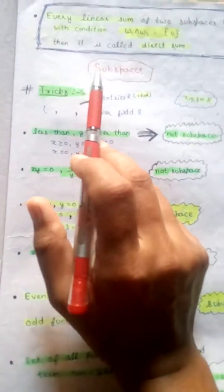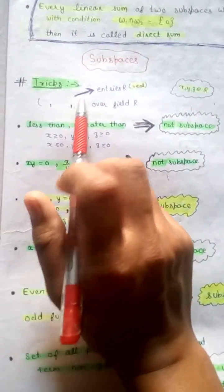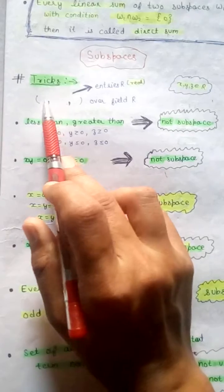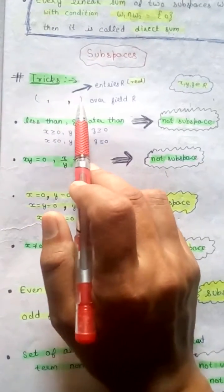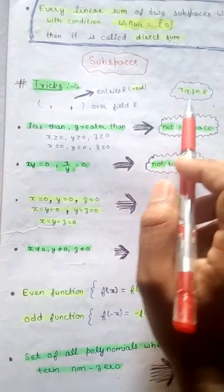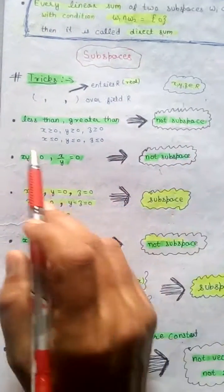In this video, we will discuss the subspace tricks for the competitive exam. R will be the real entries over field R, and x, y, z belong to R.